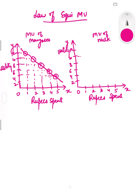Similarly we will plot for milk. The first rupee spent on milk gives us 10, the second rupee gives 8, the third rupee gives 6, the fourth rupee gives 4, and the fifth rupee gives 2. This becomes the marginal utility curve for milk.